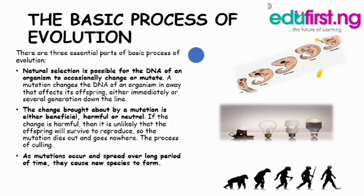The basic process of evolution has three essential parts. First, natural selection — it is possible for the DNA of an organism to occasionally change or mutate. A mutation changes the DNA of an organism in a way that affects its offspring, either immediately or several generations down the line. Second, the change brought about by a mutation is either beneficial, harmful, or neutral. If the change is harmful, it's unlikely the offspring will survive to reproduce, so the mutation dies out. Third, as mutations occur and spread over a long period of time, they cause new species to form.